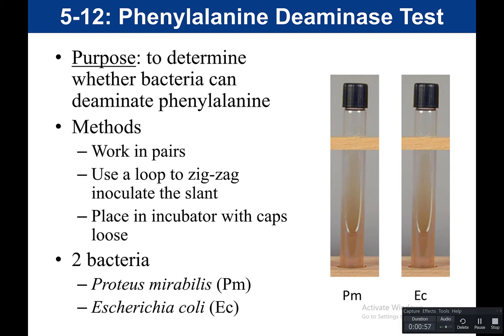This experiment would be done in pairs, and you would get two phenylalanine slants. The name of the media for your biochemical sheet is a phenylalanine slant. You would label one PM for Proteus mirabilis, and the other EC for E. coli.